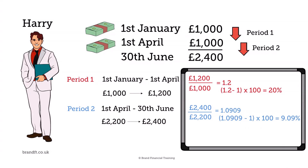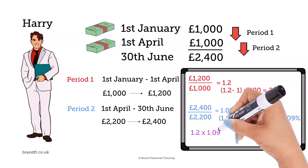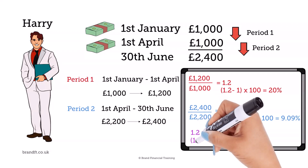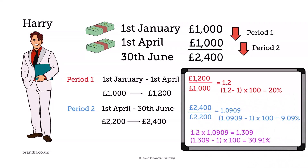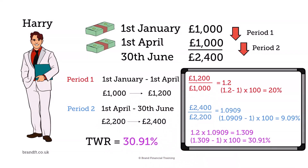To arrive at the TWR, we simply multiply those two returns together. 1.2 times 1.0909 gives 1.309. Deduct the 1 and multiply up by 100 to give a TWR of 30.91%. The process is the same regardless of how many return periods we have.